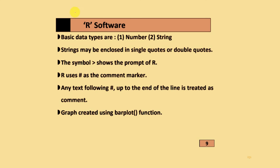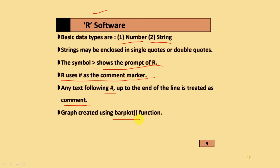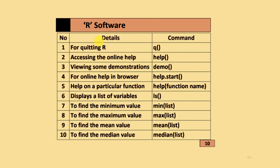In R software, the basic data types are numbers and strings. Strings may be enclosed in single quotes or double quotes. The greater-than sign symbol shows the prompt of R. R uses the hash symbol as the comment marker — any text following the hash sign up to the end of the line is treated as a comment. Graphs are created using the bar plot function. R software's related details and different commands are provided.